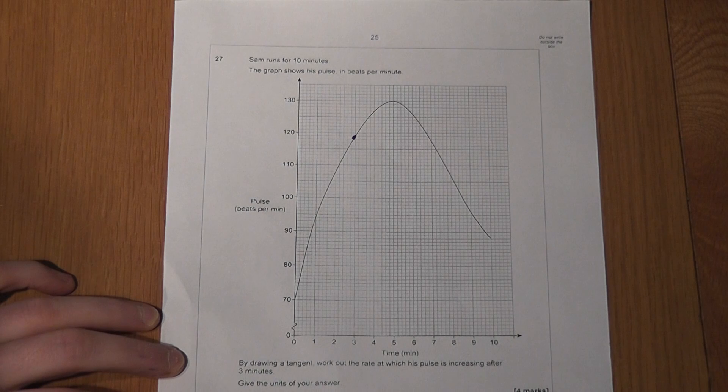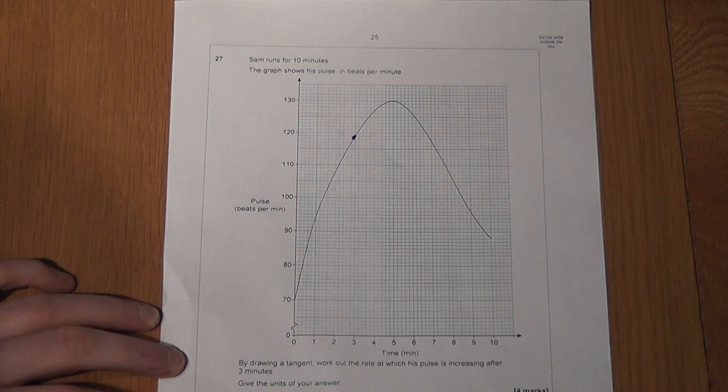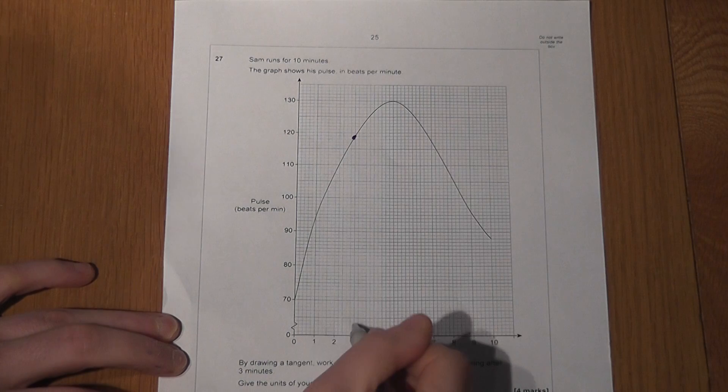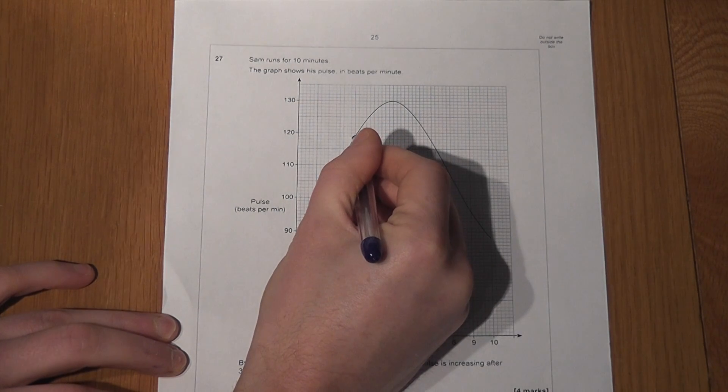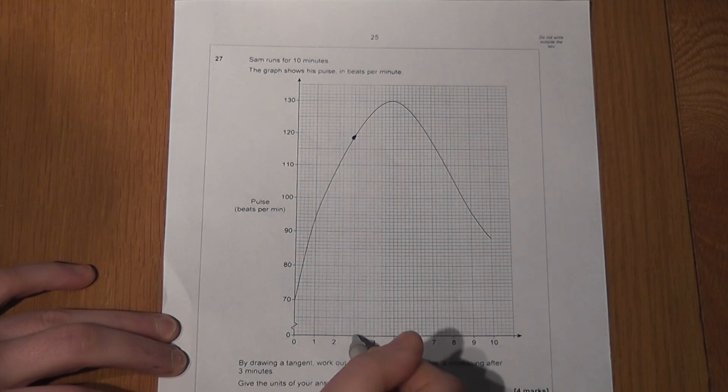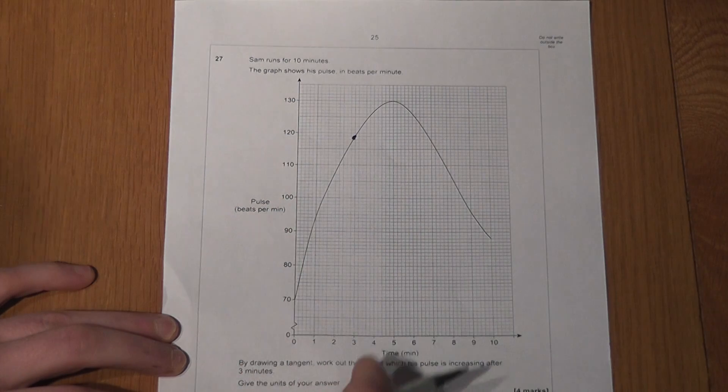The question says, draw a tangent to find the rate at which his pulse is increasing after three minutes. So here is three minutes, and there's the dot on the graph which shows his pulse after three minutes.